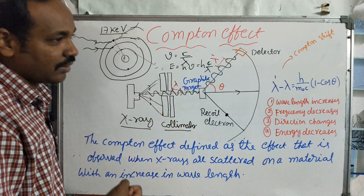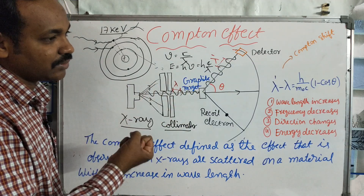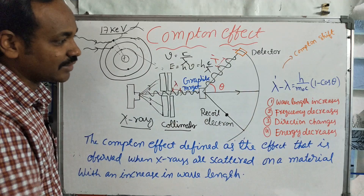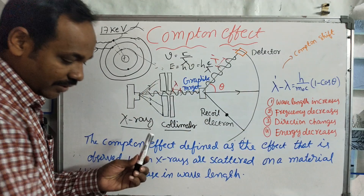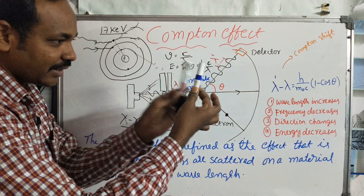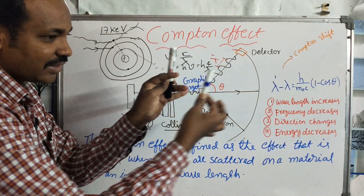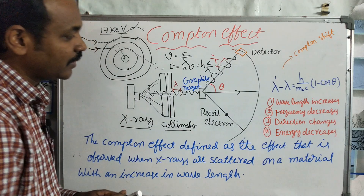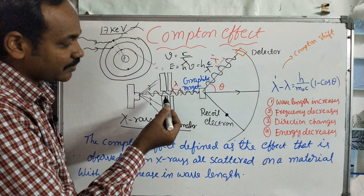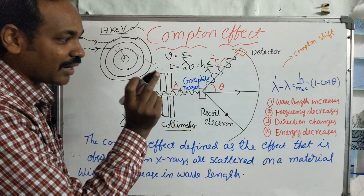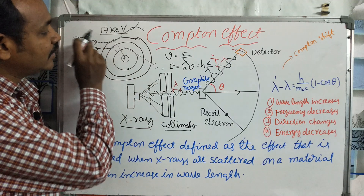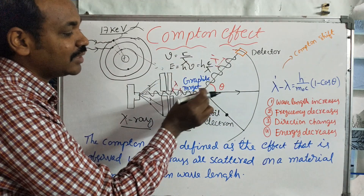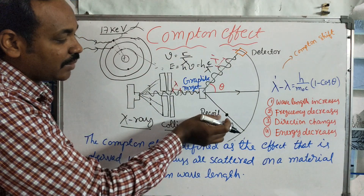A particle transfers energy and momentum, just like a car collision — when two objects collide, energy and momentum are transferred. Similarly, photons are packets of energy. When a photon (a particle of energy) collides with an electron, the two particles interact. The photon transfers part of its energy and momentum to the electron. One particle goes out as the scattered photon and the other is the ejected electron.